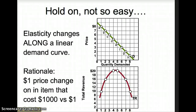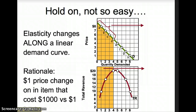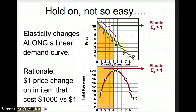The top diagram shows the demand curve, the bottom diagram shows the total revenue curve, which is what we just discussed on the last few slides. The top portion of the demand curve is elastic. The percentage change in quantity demanded is greater than the percentage change in price. As price decreases, total revenue increases.